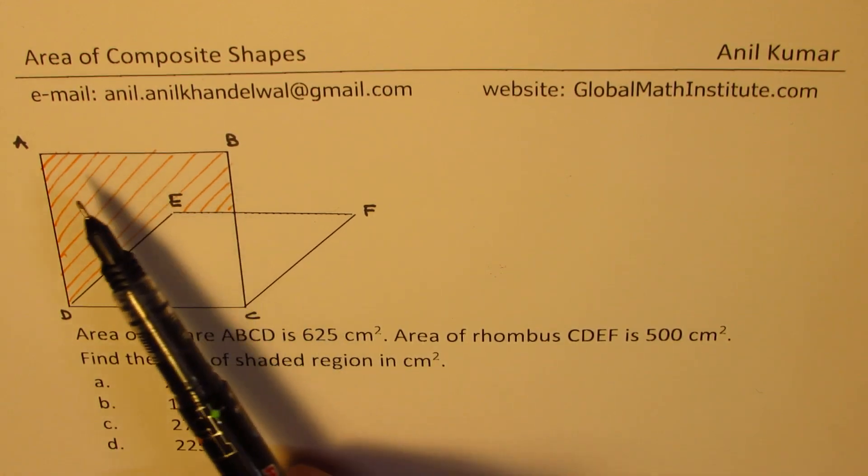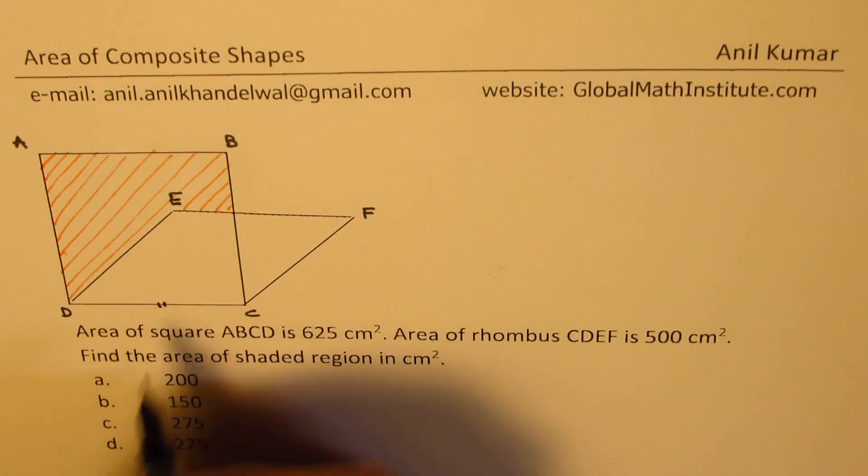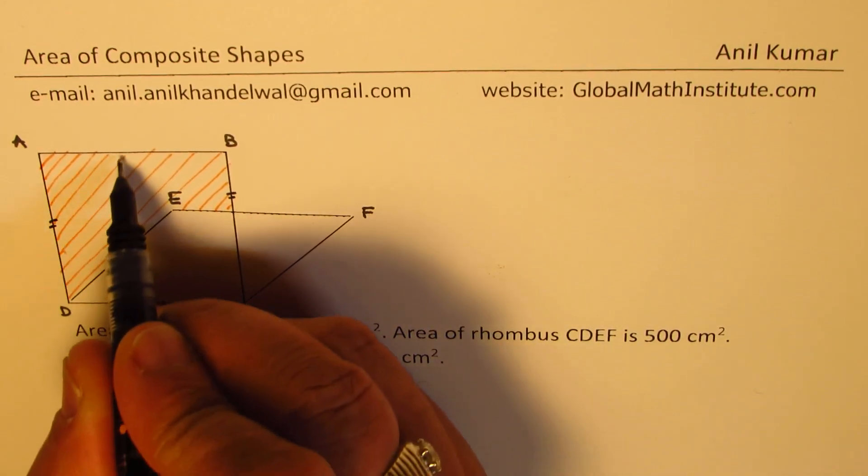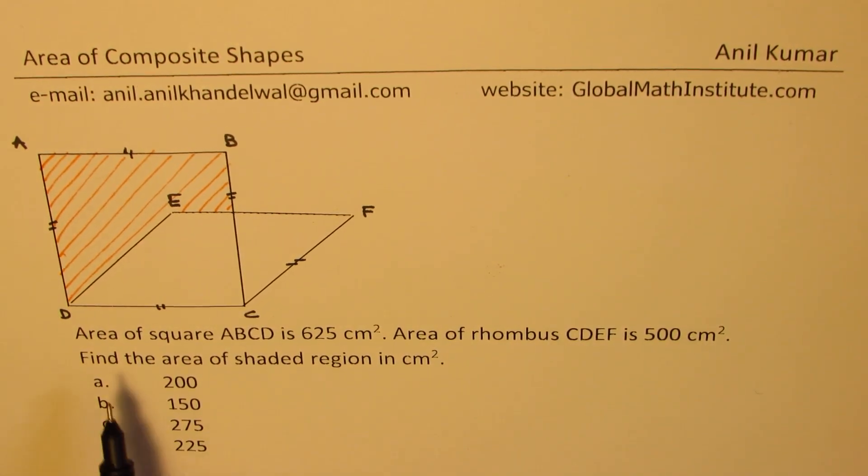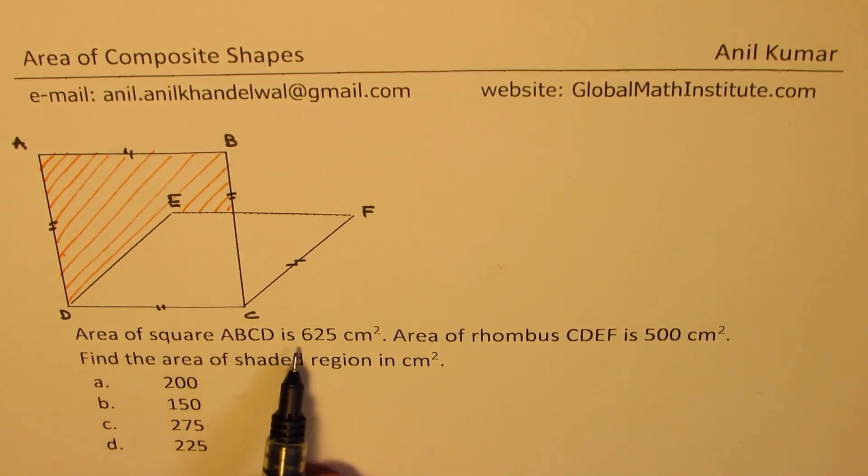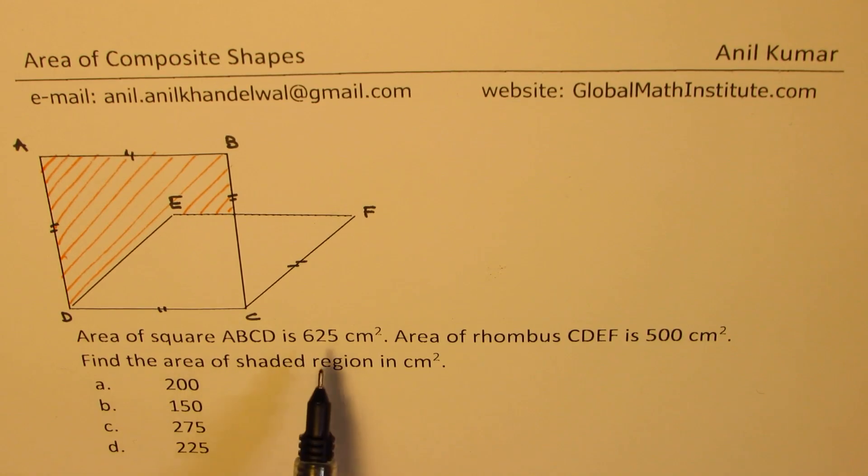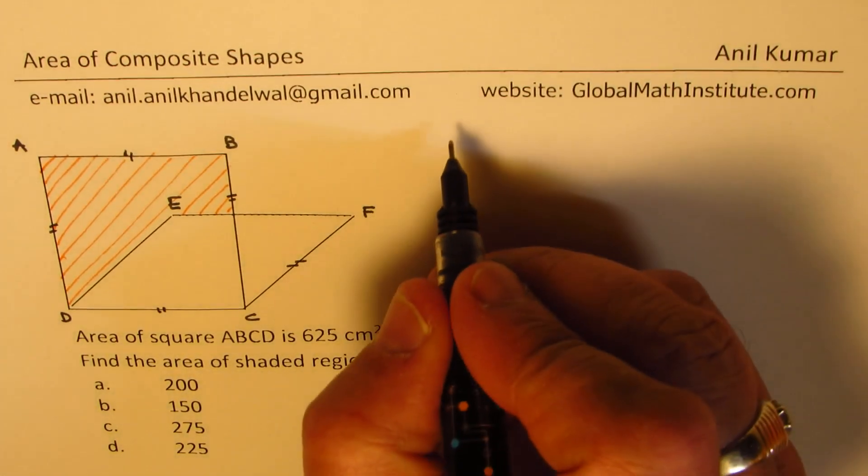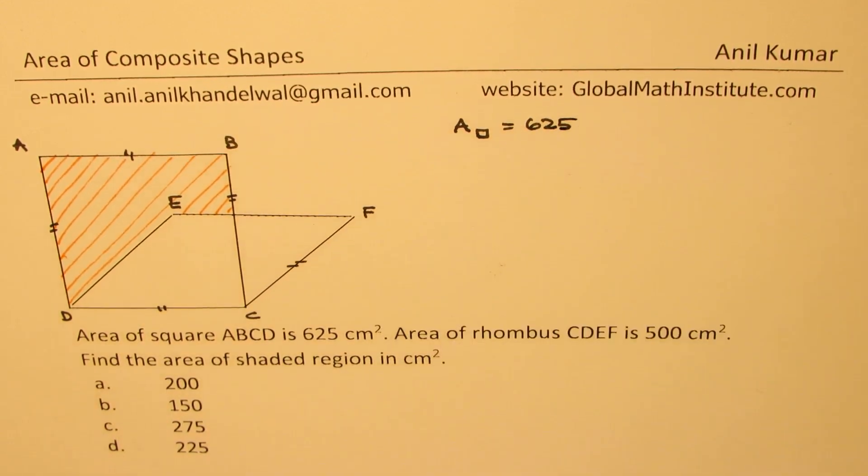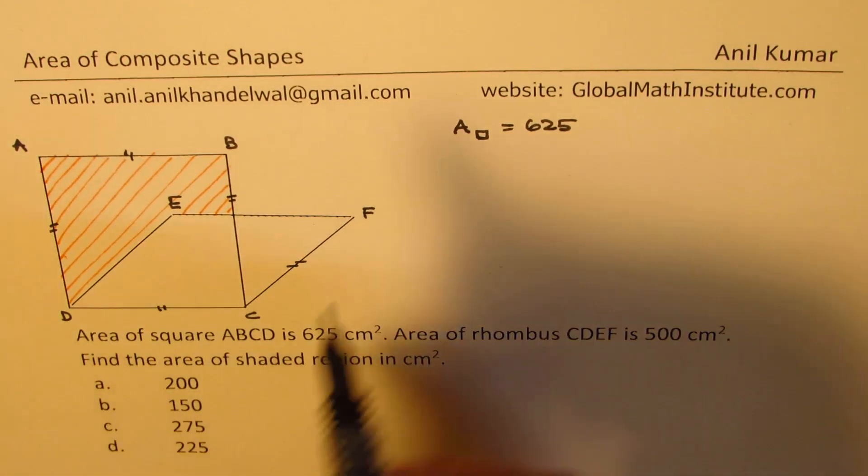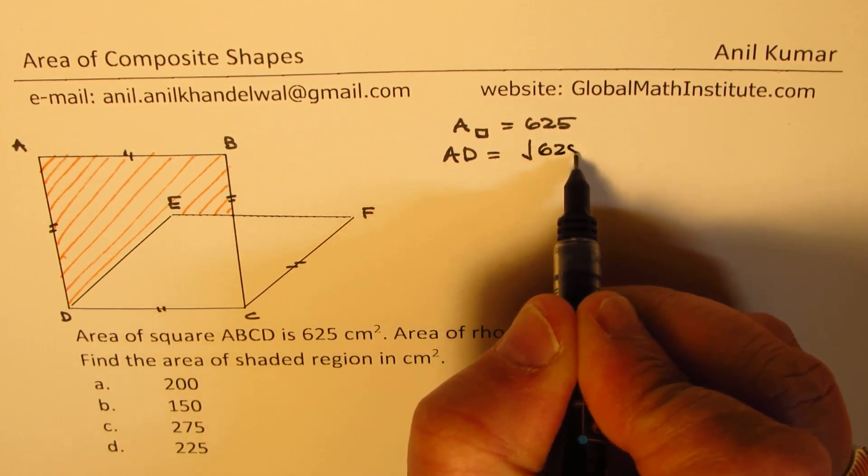Now that is the square ABCD and this is the rhombus. All sides of square and rhombus are equal, and that should help us to find an answer. We are given area of the square ABCD as 625. That means each side of the square should be square root of 625. So area of square equals 625. In that case, I can write that AD, the side of the square, will be square root of 625, which is also equals to DC or CD square.